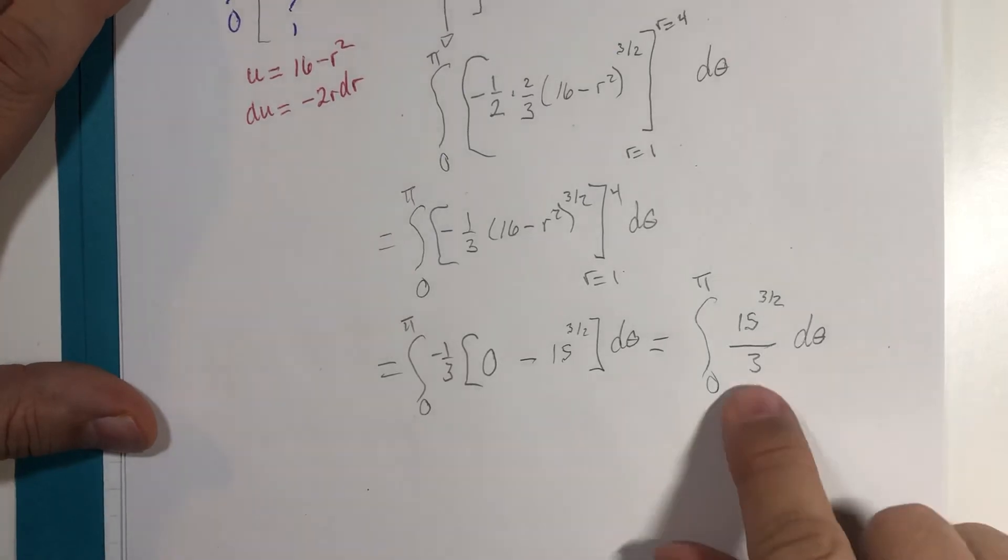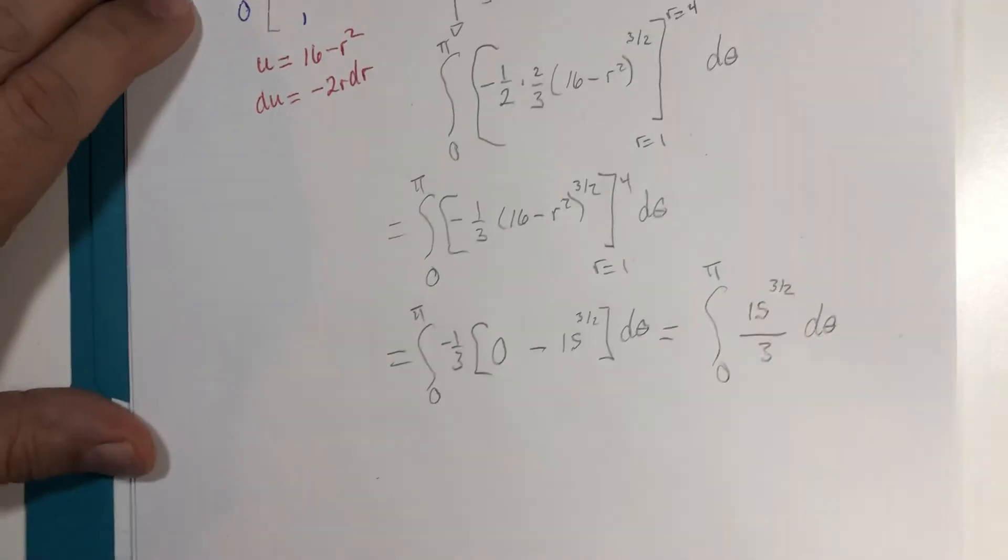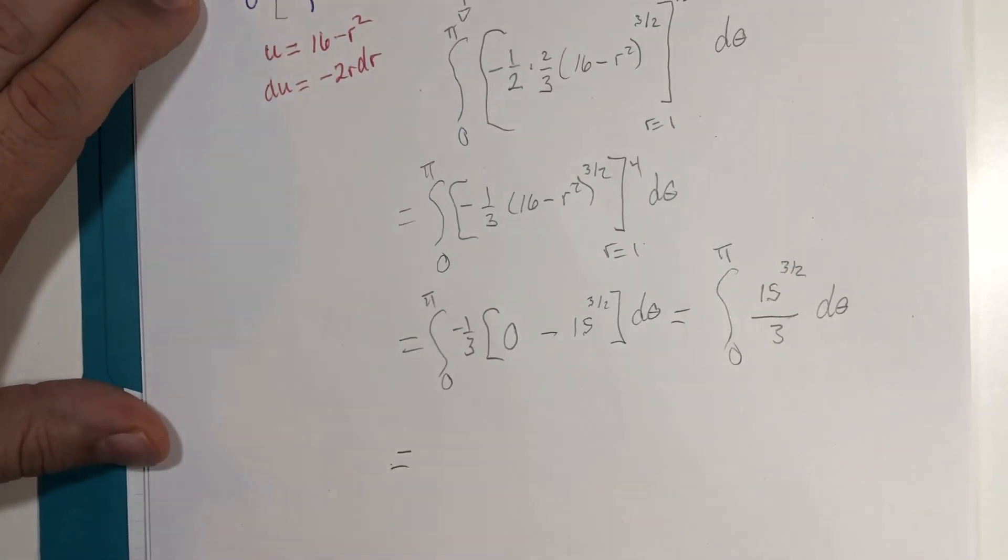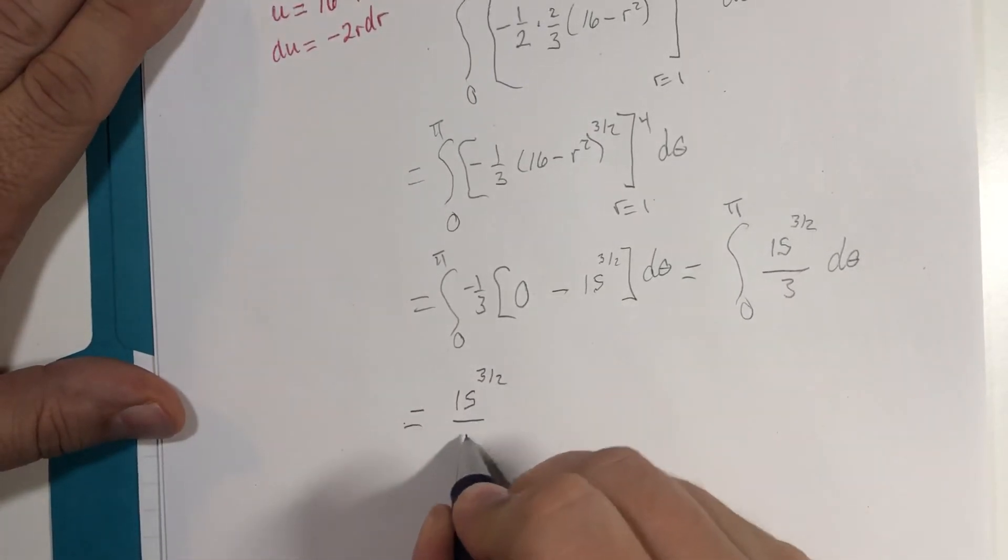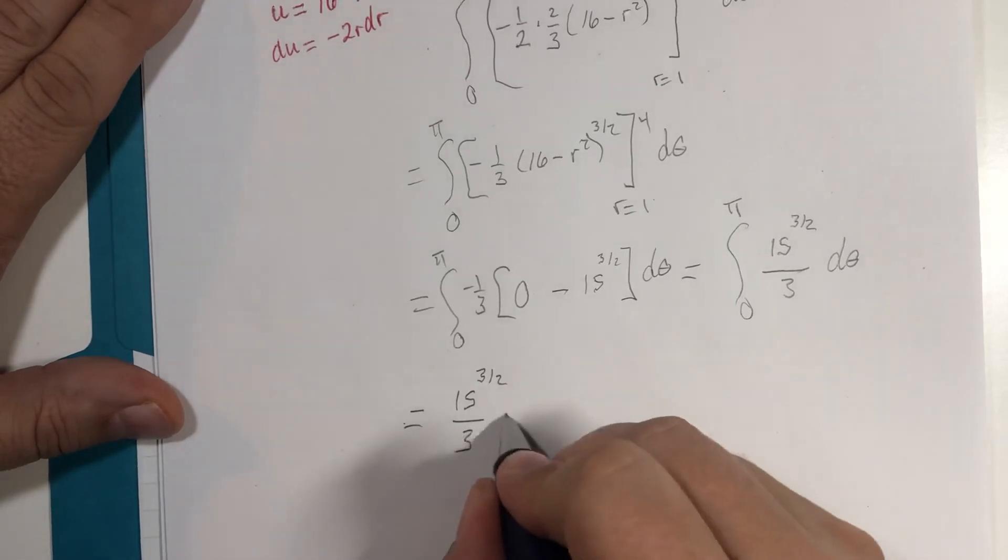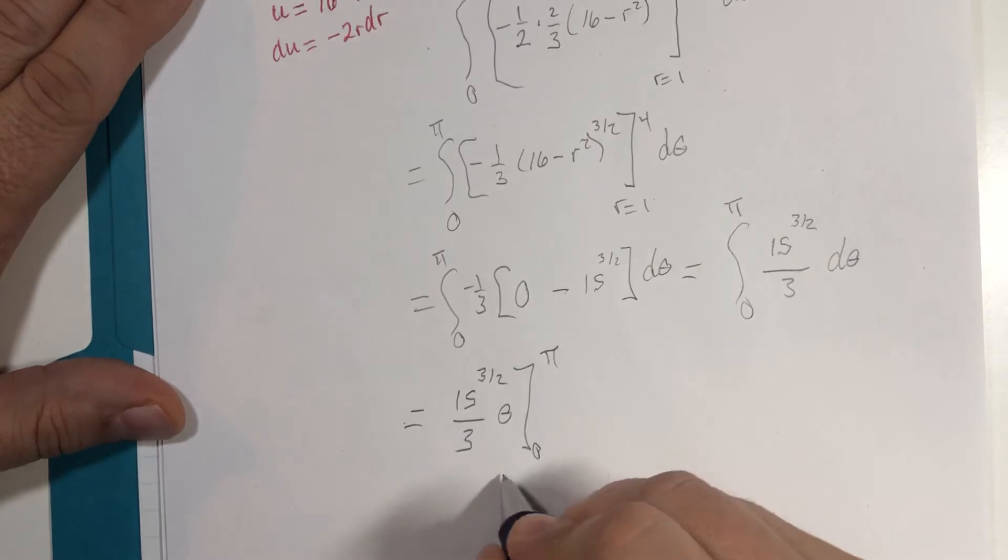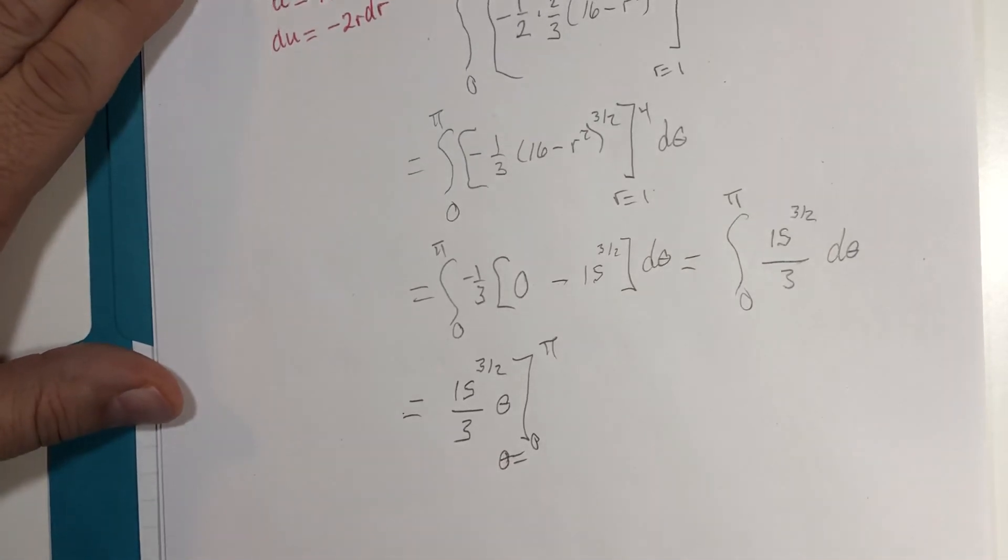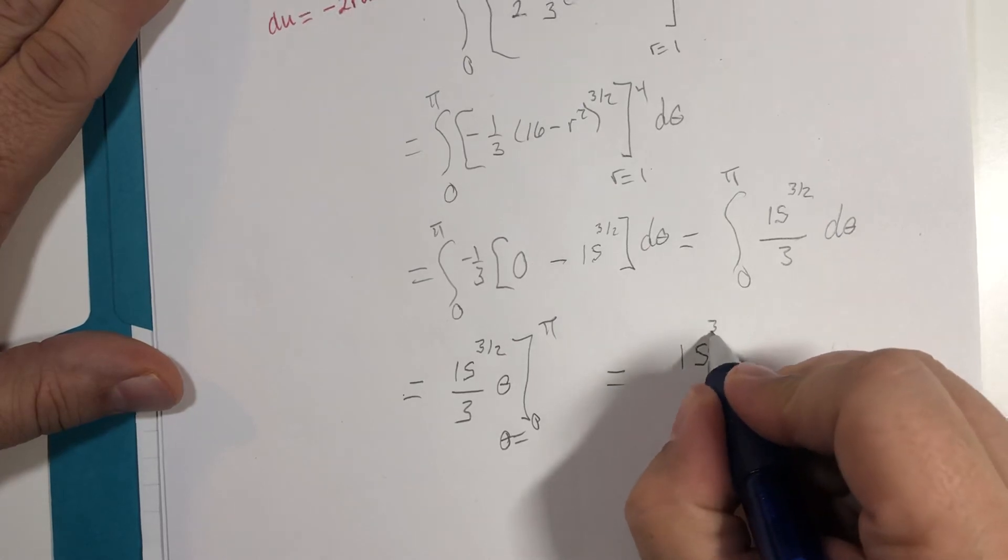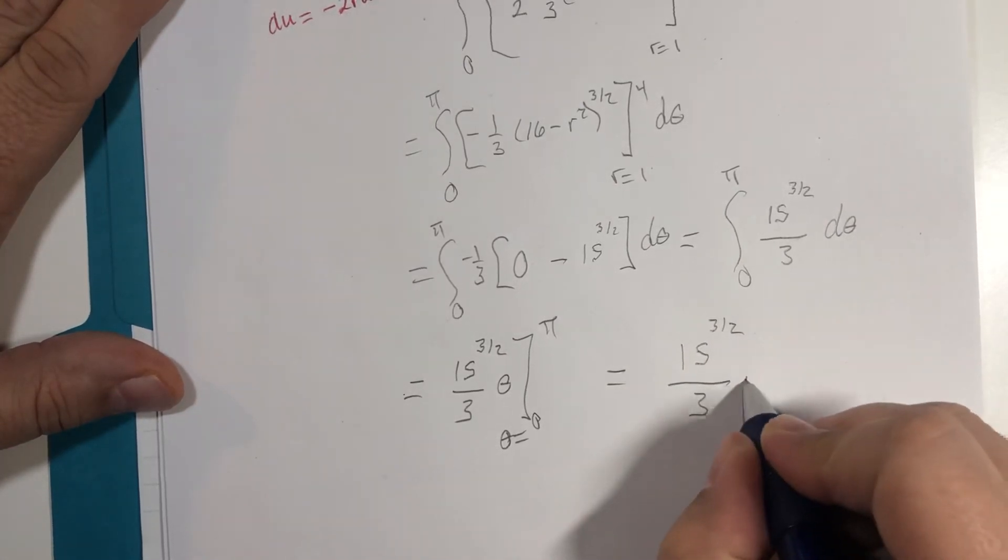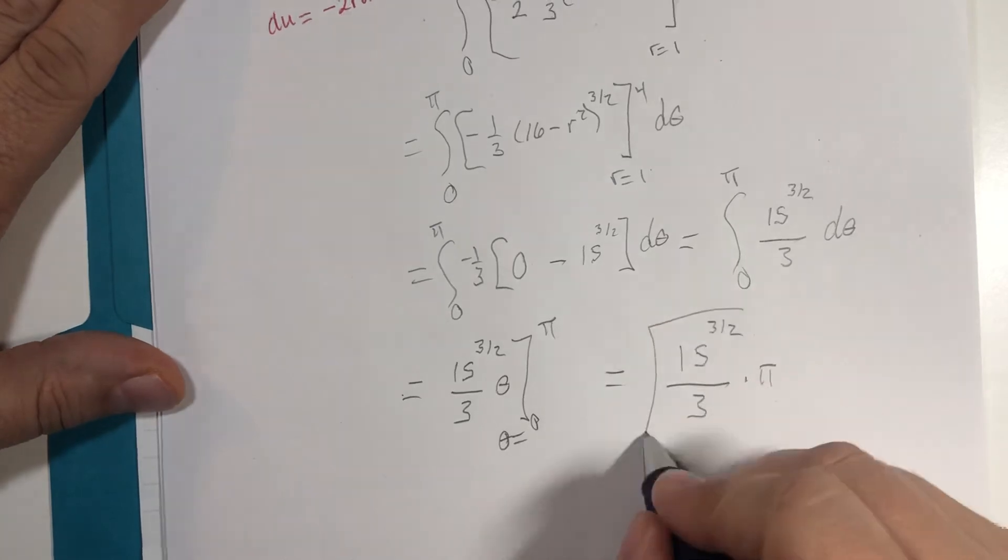Without a calculator, I'm just going to leave this as it is. The antiderivative of that is going to be 15 to the 3 halves over 3 times theta, and theta goes from 0 to pi, and ultimately I get 15 to the 3 halves power divided by 3 multiplied by pi.